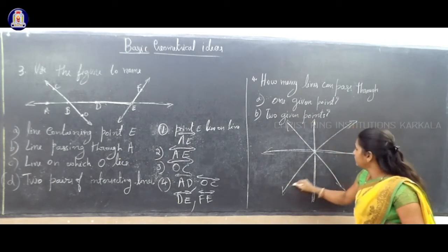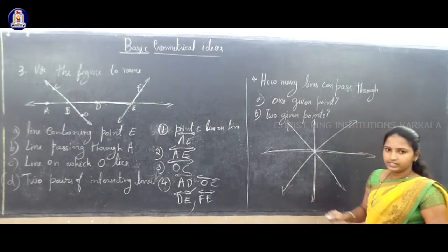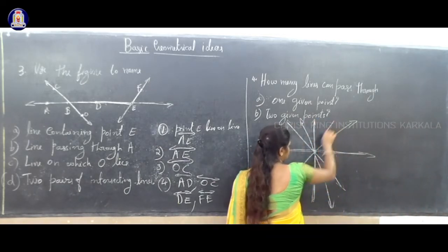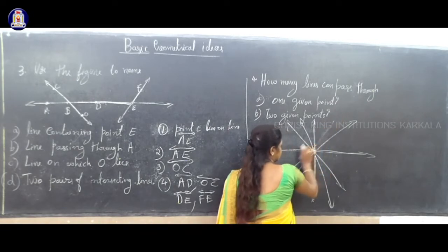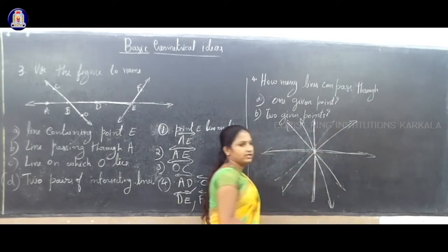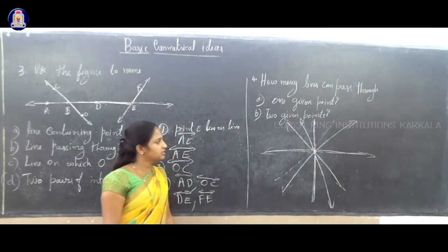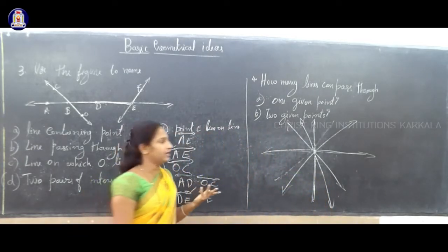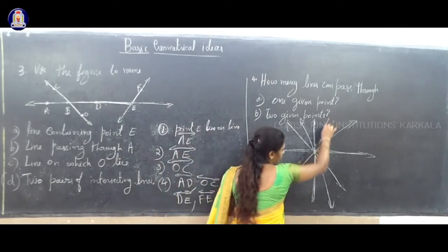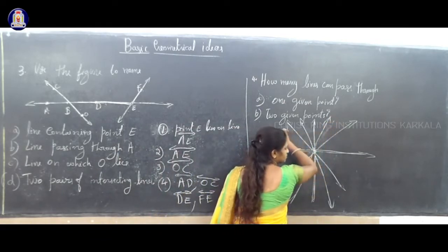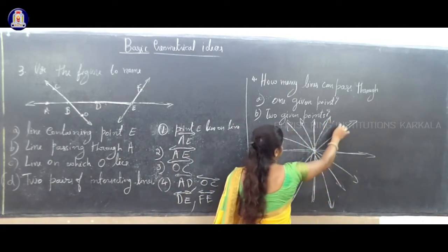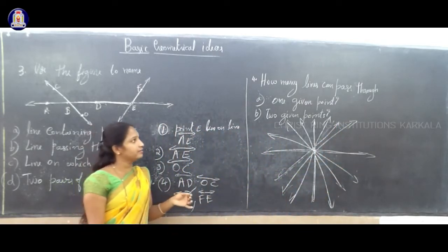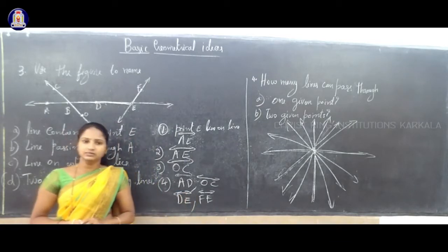You can draw lines in many directions through the same point. These lines are intersecting at the same point. We can say that we can draw infinitely many lines through one given point.